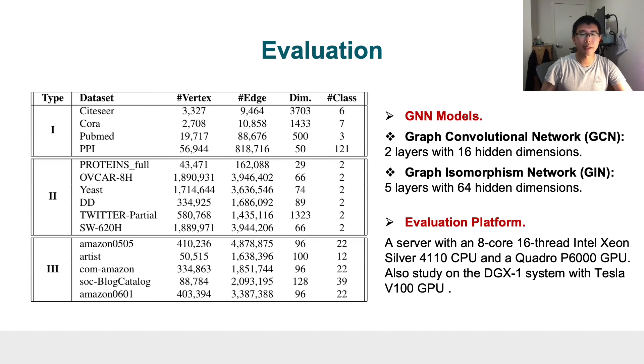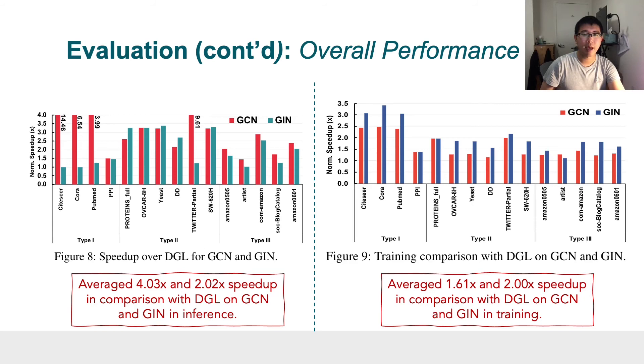Let's begin with the overall performance. Our design achieved an average 4x and 2x speedup in comparison with DGL on GCN and GIN during inference, respectively. And our design achieved 1.6x and 2x speedup in comparison with DGL on GCN and GIN during training, respectively.